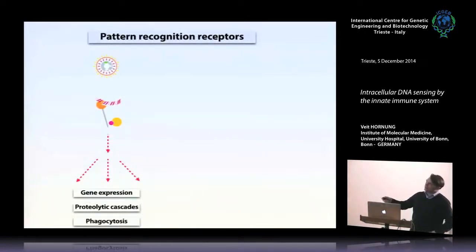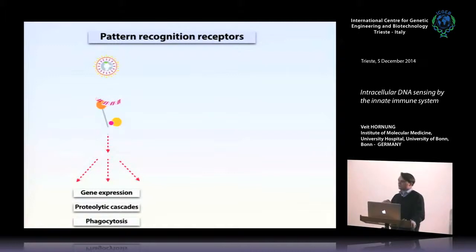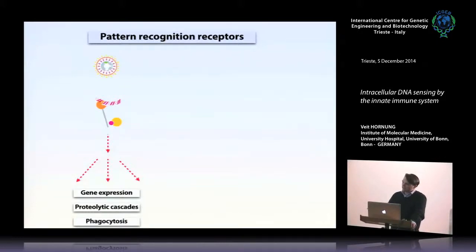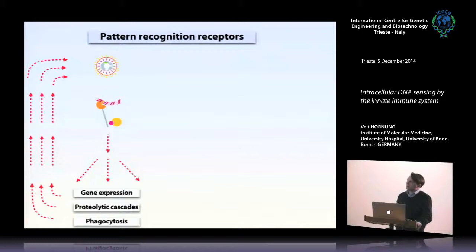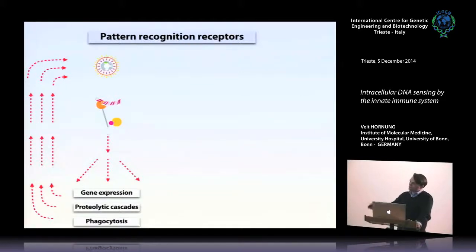Pattern recognition receptors, when engaged, activate signal transduction cascades and lead to de novo gene expression — visible in microarray analysis. They can also activate proteolytic cascades, caspases, and the inflammasome pathway, as well as phagocytosis and autophagy. In a simple scheme, they feed back on the pathogen and trigger effector mechanisms to eliminate it. Usually this involves adaptive immunity as well, but in the simplest case, a single cell senses a pathogen and eliminates it.